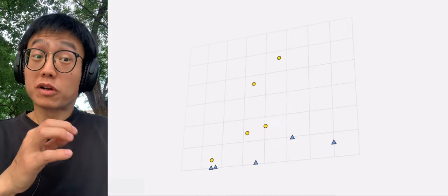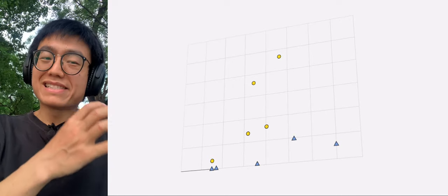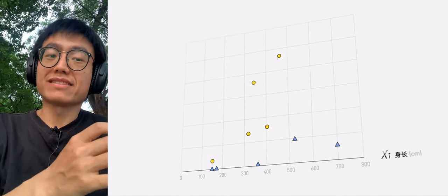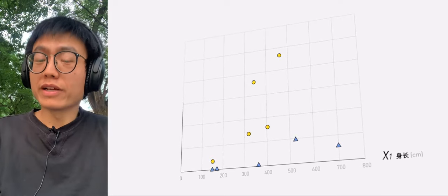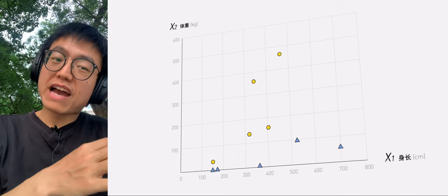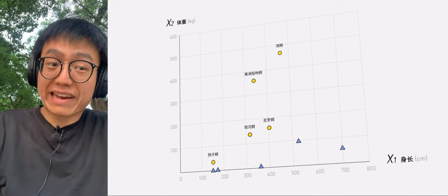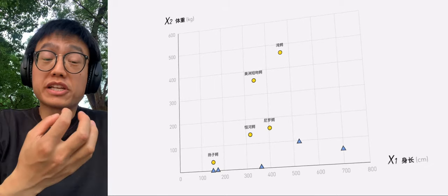Here are 10 points representing crocodiles and snakes. Abscissa X1 is body length, and ordinate X2 is body weight. Five yellow circles represent five species of crocodile data, and five blue triangles represent five species of snakes.